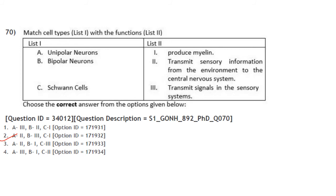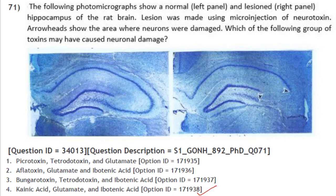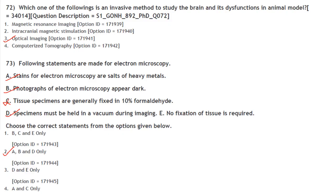Photomicrographs show a normal and lesioned hippocampus of the rat brain. Lesion was made by micro-injection of a neurotoxin; arrowheads show areas of neuronal damage. The group of toxins that may have caused this damage is option 4: kainic acid, glutamate and ibotenic acid. Which of the following is an invasive method to study brain dysfunction in an animal model? Optical imaging. Answer is option 3.